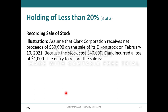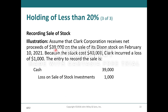Assume that Clark Corporation receives net proceeds of $39,000 on the sale of Dixon stock on February 10th, 2021. Because the stock cost $40,000, Clark incurred a loss of $1,000. The entry to record the sale is a debit to cash for $39,000, a debit to loss on sale of stock for $1,000, and a credit to stock investments for $40,000 for the original entry.